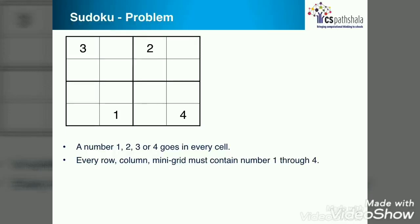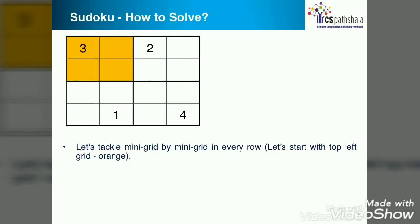In a 4 by 4 Sudoku problem, as shown here, numbers 1, 2, 3 and 4 go in every cell. Each row, column and mini grid must contain these numbers, exactly 1 to 4. Still sound difficult? Let's break it down into a smaller problem. Let's start 1 to 4 cell grid at a time.